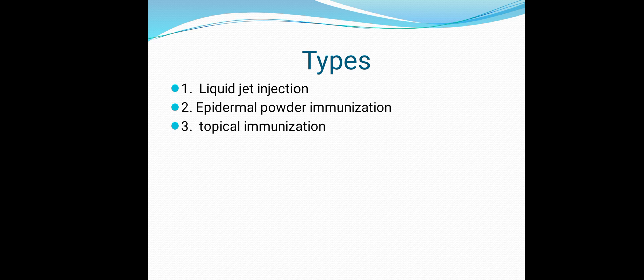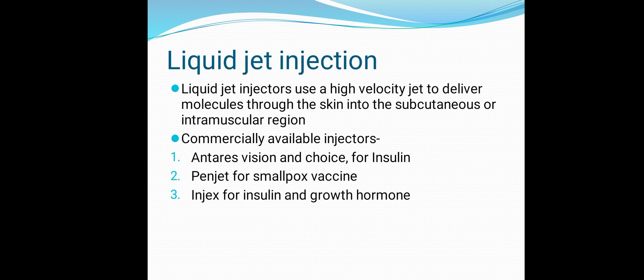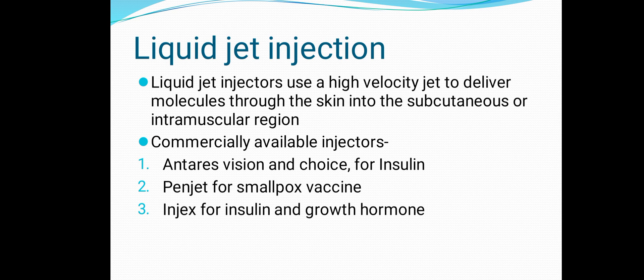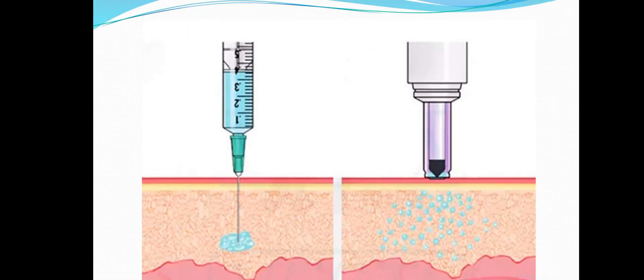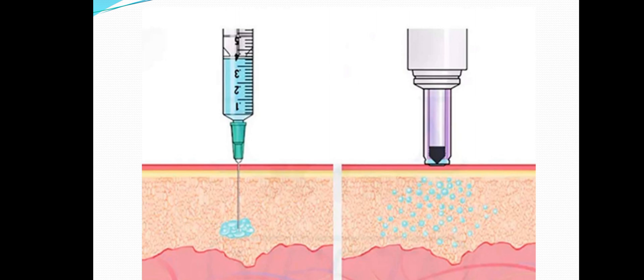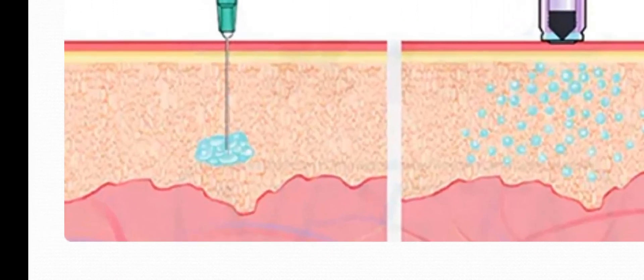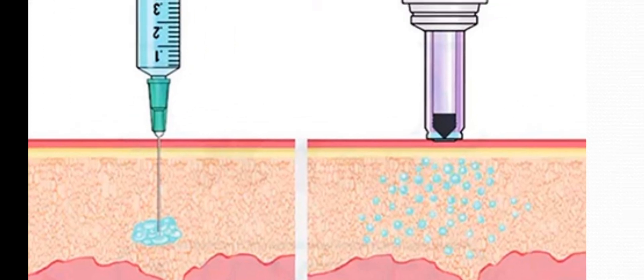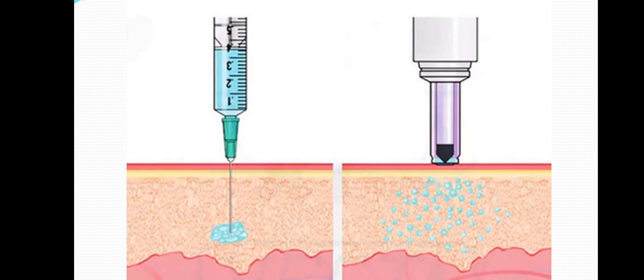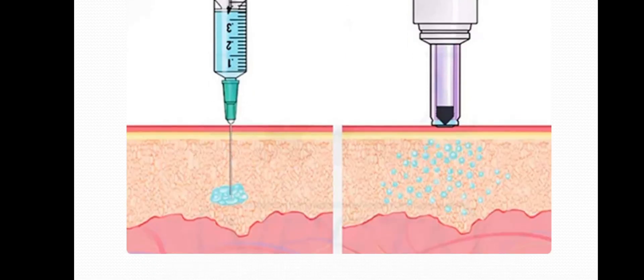Liquid jet injection uses a high-velocity jet to deliver molecules through the skin into subcutaneous or intramuscular regions. Examples include pen jet injectors for insulin. Compared to conventional needle-syringe delivery — where drug is released in bulk form causing slower absorption and pain — liquid jet injection delivers in various directions, so there is no pain and delivery is faster.